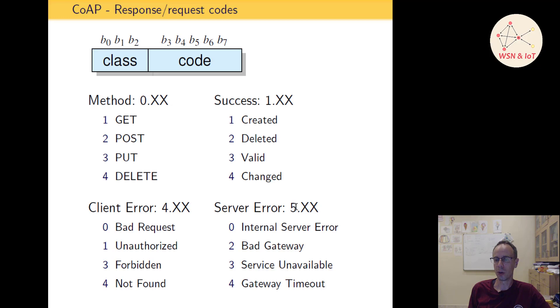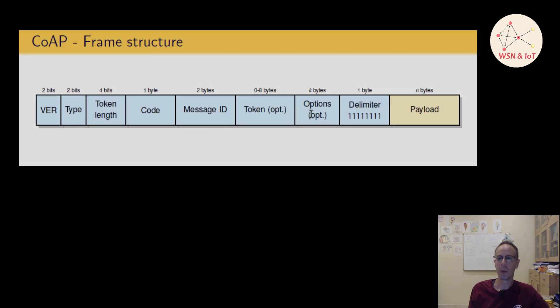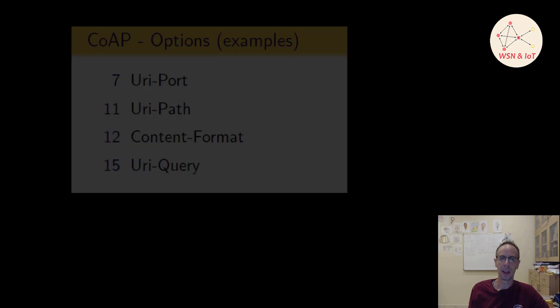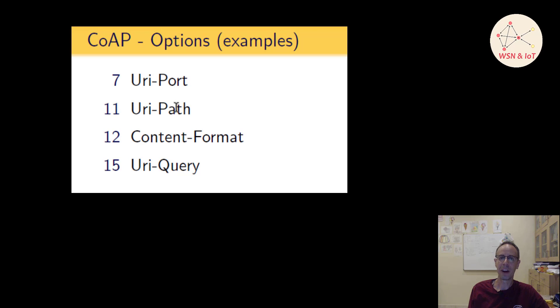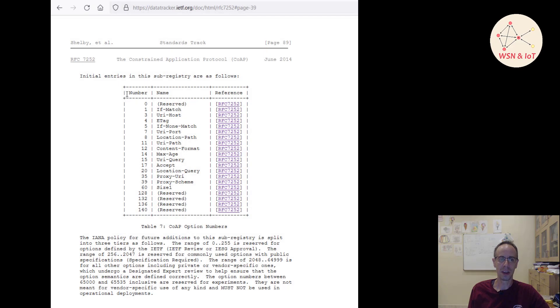The option field contains additional parameters for our connection. There are option numbers which identify the option. So the number 11, for example, specifies the URI path to the resource which we want to reach. Number 12 specifies the content format from our payload. There is a list with the option numbers in the RFC—we see here, for example, the list—and there are 15 predefined option numbers.